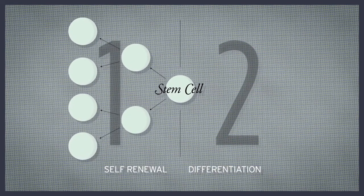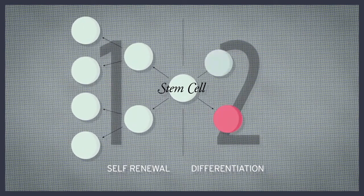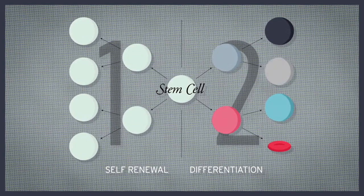Second, it must be able to differentiate. In other words, it must be able to divide and give rise to specialized cells.